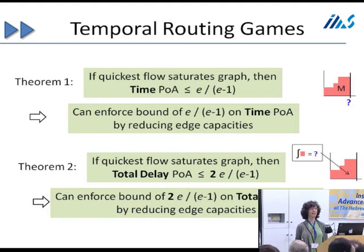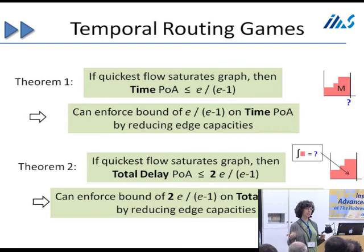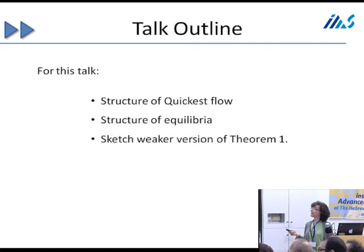Is there a measure of the price of anarchy with respect to the non-capacitated graph? All the graphs we're talking about are capacitated — it's just a question of what the capacities are. We're measuring the ratio of the equilibrium in the revised graph — there's a unique equilibrium in the revised graph — to the optimal in the original graph, which is also the optimal in the new graph.